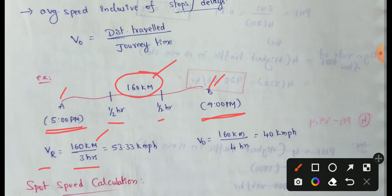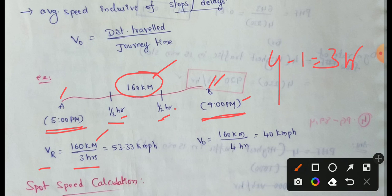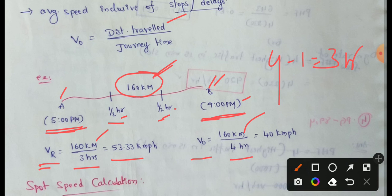Running time is 3 hours (journey time of 4 hours minus 1 hour of stops). Running speed equals 160 divided by 3 equals 53.33 km/h. Overall speed equals 160 divided by 4 hours equals 40 km/h.